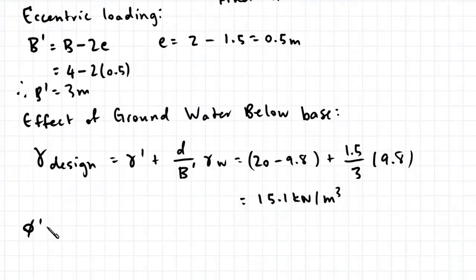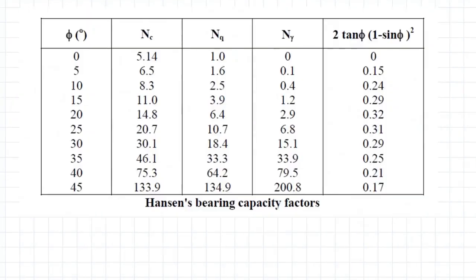Now the drained friction angle of our soil is 40 degrees. So going to this table, we can read off our values for Nc, Nq, Ngamma, and this final expression here.